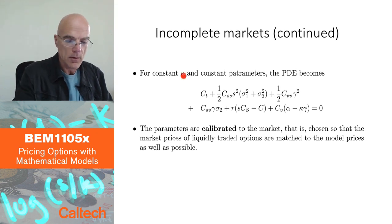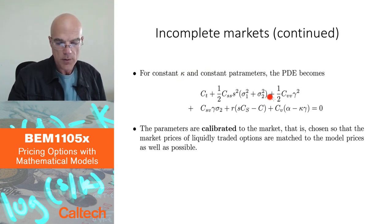Same as before. This is standard derivative with respect to time. Now, my total volatility is sigma_1 squared plus sigma_2 squared because I had two Brownian motions in S.